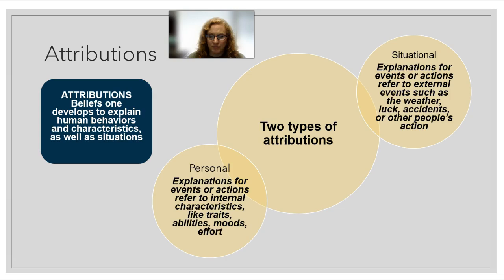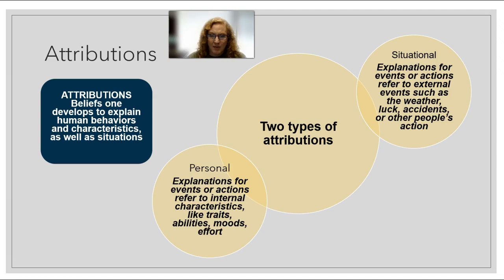A situational attribution is where we say something happened because of something external to the person. So we might say Joe did not win the scholarship because he was unlucky, or because the committee knew it was him and didn't like him. We might say somebody was late because of the weather or traffic. For example, I was supposed to meet an acquaintance and her two kids at the water park — I had extra tickets and she was supposed to meet me at the gate at 10 when it opened. We waited 20–30 minutes and they never came. When I contacted her, she said 'I'm sorry, we're running late — my kids didn't do their chores so we're a little behind.'